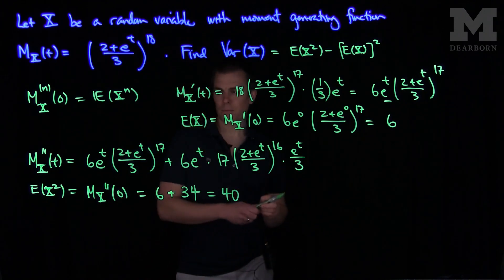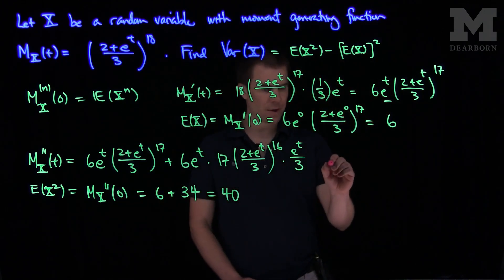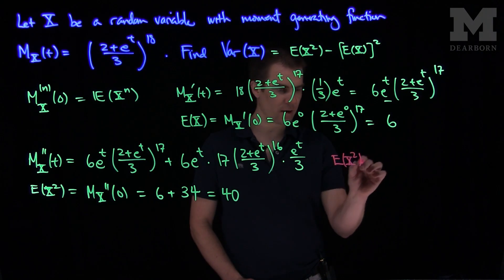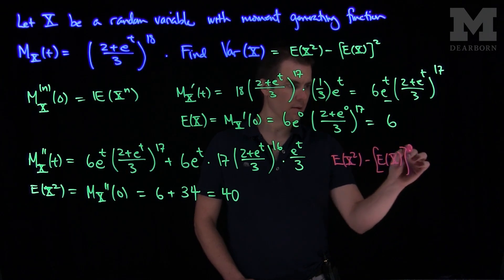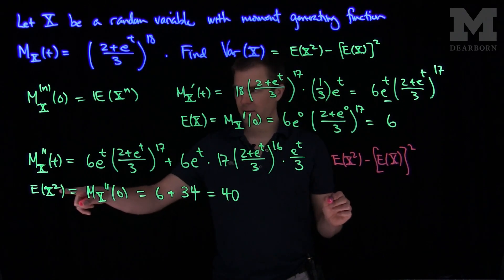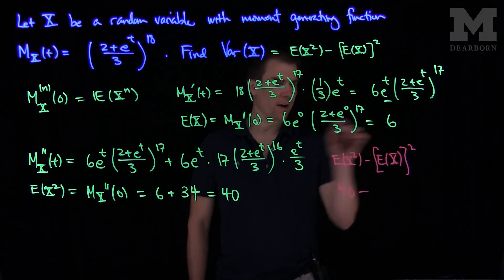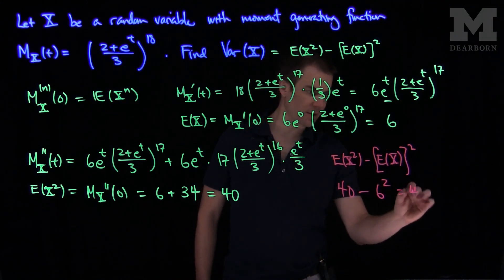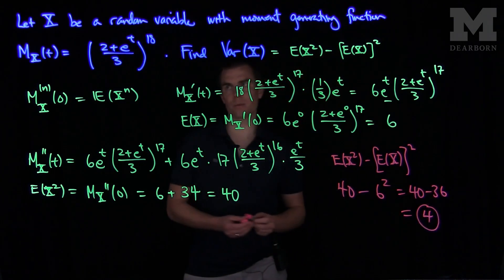Now what we need to do is find the variance. To find the variance, we compute the expected value of x squared minus the expected value of x quantity squared. We just found the expected value of x squared to be 40. We found the expected value of x to be 6, so that's going to be 6 squared. So this is 40 minus 36, and that's equal to 4. So the variance of this random variable is 4.